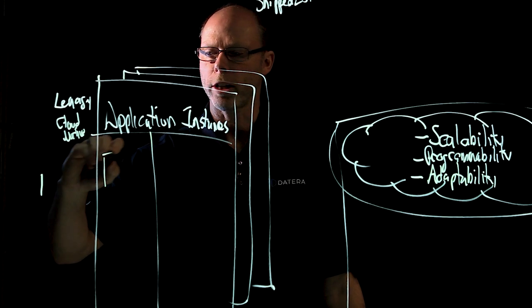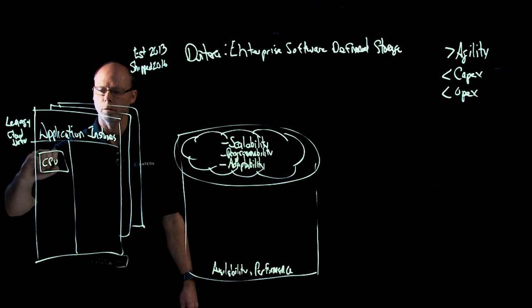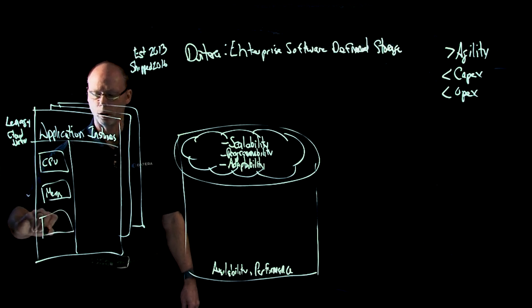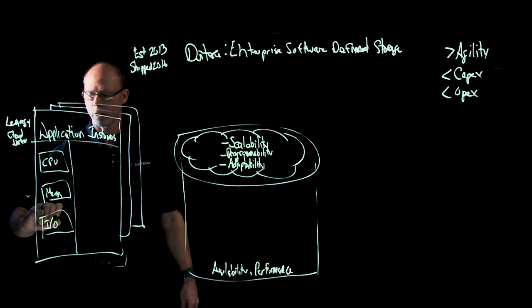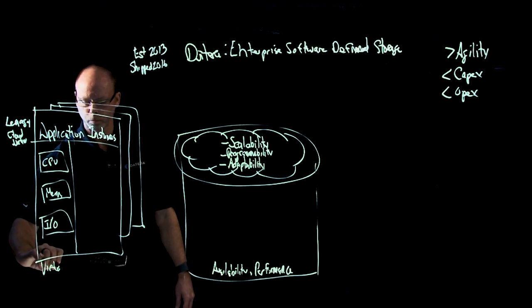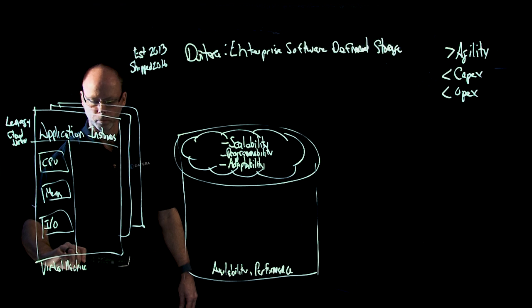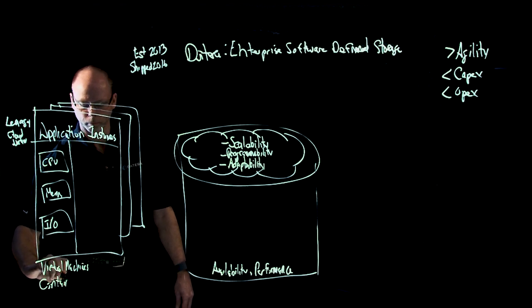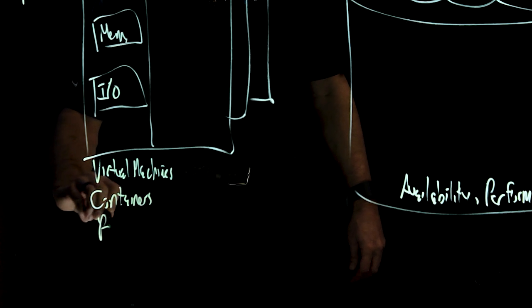When I'm running applications, each application instance needs CPU, it needs memory, and it needs I/O. And these can be deployed in virtual machines, they can be deployed in containers, or they can be deployed bare metal.